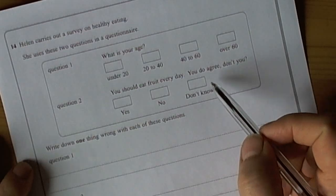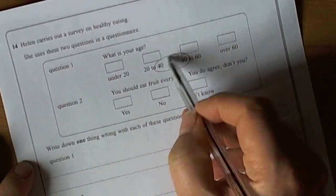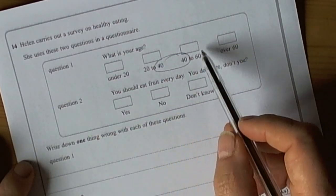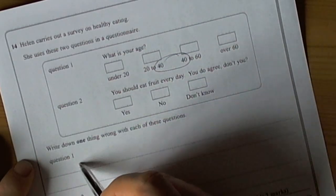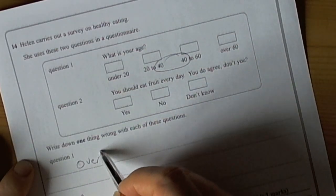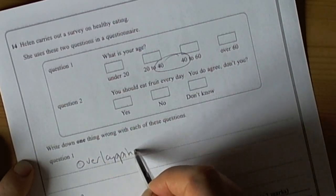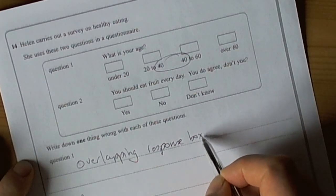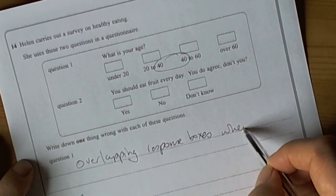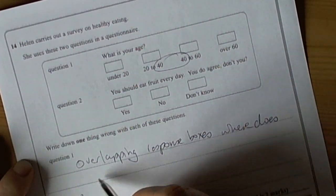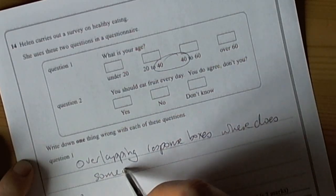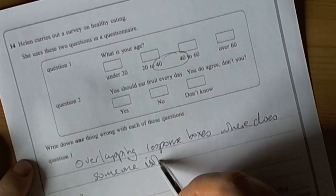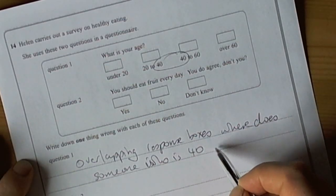Well, the classic kind of problem with this kind of response is there's an overlap here because the response boxes should allow you just to tick one only. But what if you're 40? So, what's wrong with question one? We've got overlapping response boxes. Where does someone who is 40 tick?